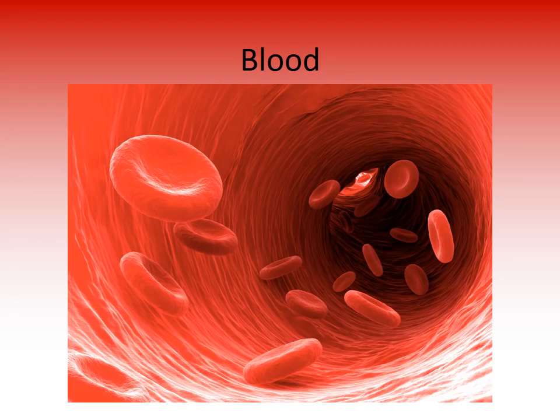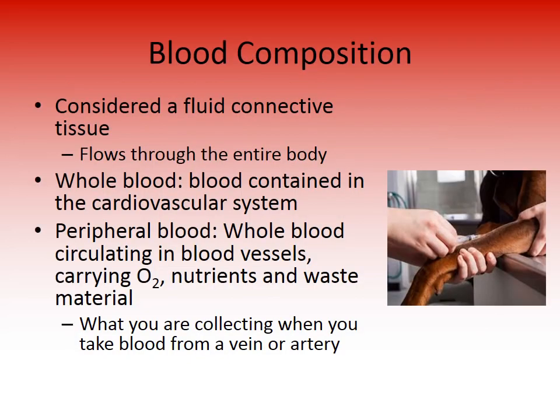Blood is considered a fluid connective tissue. We talked about different types of connective tissue, and blood is one of them — which is strange because you think of connective tissue as a solid mass. Blood flows through the entire body. Whole blood refers to the blood contained in the cardiovascular system, while peripheral blood is the whole blood circulating in the blood vessels, carrying oxygen, nutrients, and waste materials.